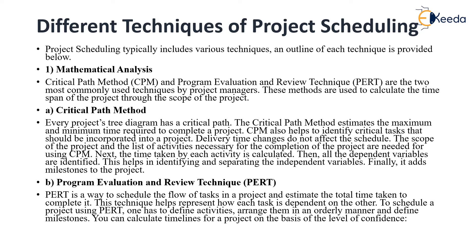Critical Path Method: every project's tree diagram has a critical path. The Critical Path Method estimates the maximum and minimum time required to complete a project. It also helps to identify the critical tasks that should be incorporated into a project. Delivery time changes do not affect the schedule. The scope of the project and the list of activities necessary for completion are needed for using the Critical Path Method.